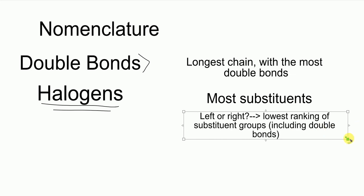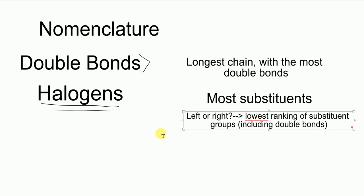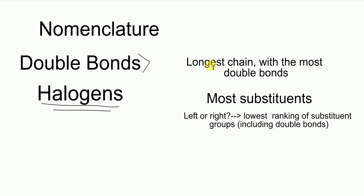This also includes double bonds. We want our double bonds to be on the lower number, as always. It's the same thing as any other substituent that comes off the ring — I want everything to be on the lowest number possible, and that'll determine whether I go from the left side or the right side. Essentially it's the same rules, just now we've introduced priority. I'm looking at the chain that has the most double bonds, and it doesn't matter if that chain is two carbons or four carbons long — if it has more double bonds, I take that as my parent.